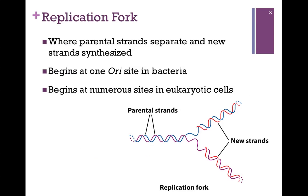The replication fork is the point at which we've separated the two strands, and that's illustrated in our figure at the bottom here. Here's our parent DNA — we've separated the two strands at the replication fork, and the newly synthesized DNA is in red. In bacteria, they have a closed, circular, double-stranded DNA molecule, and replication begins at one site called the ori site. In eukaryotic cells, because of the size of the DNA molecule, we begin replication at numerous sites.